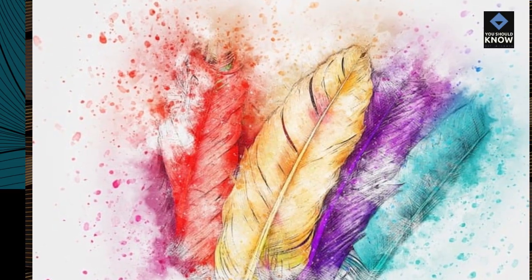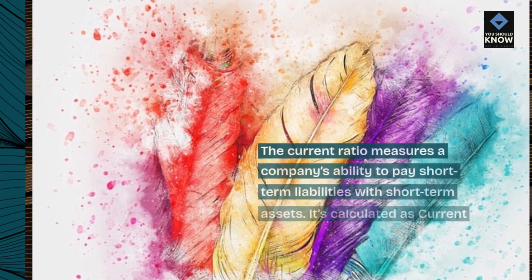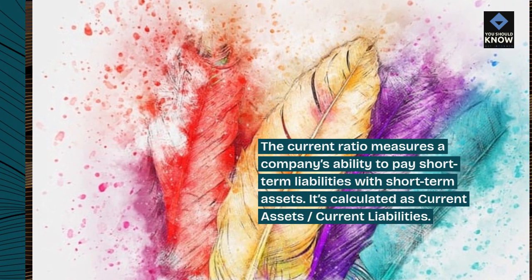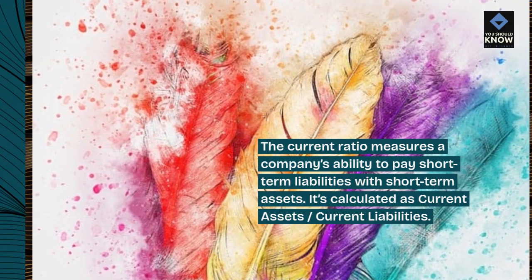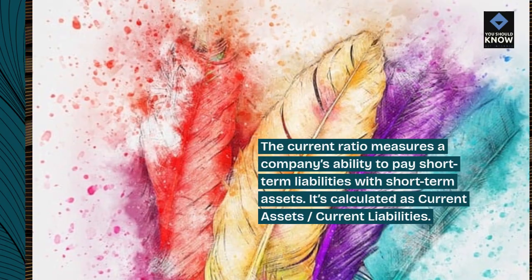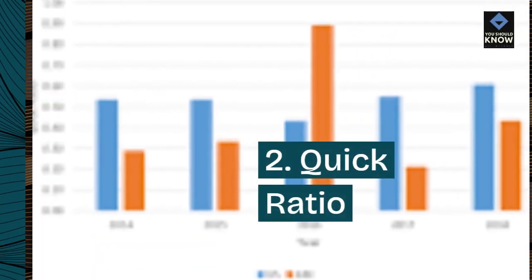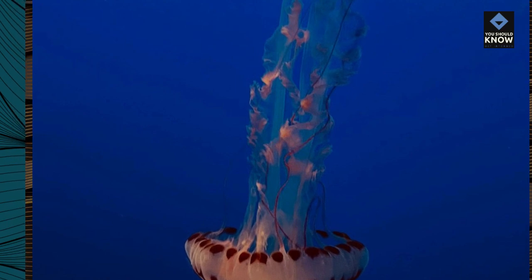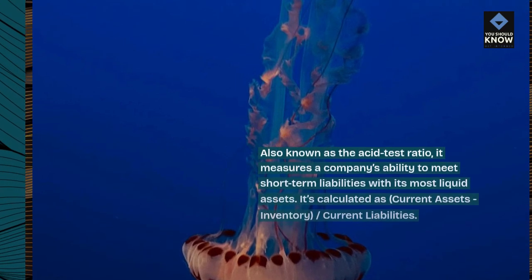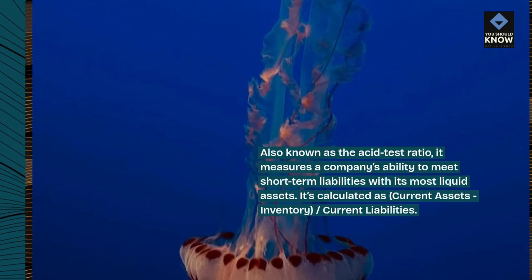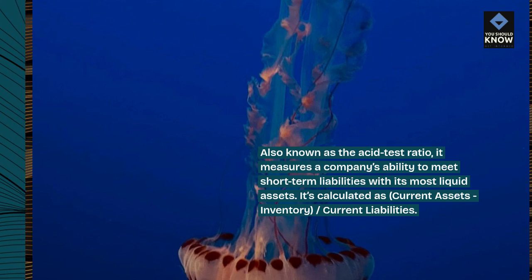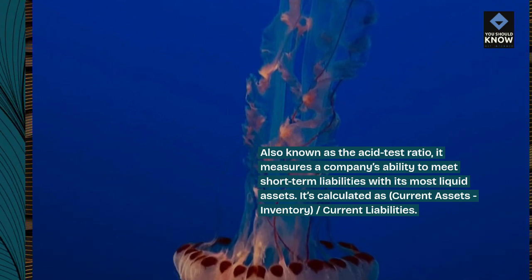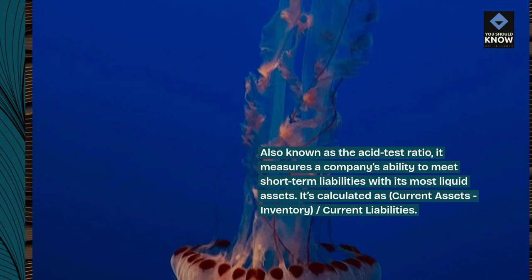1. Current ratio. The current ratio measures a company's ability to pay short-term liabilities with short-term assets. It's calculated as current assets divided by current liabilities. 2. Quick ratio. Also known as the acid test ratio, it measures a company's ability to meet short-term liabilities with its most liquid assets. It's calculated as current assets minus inventory, divided by current liabilities.